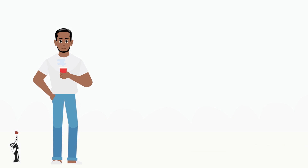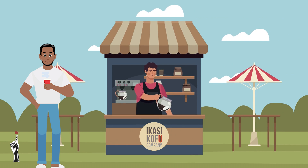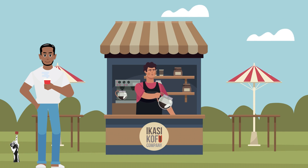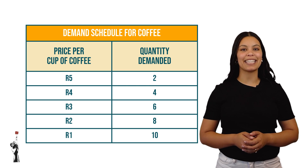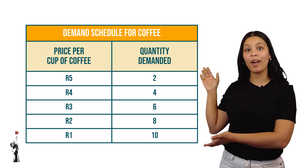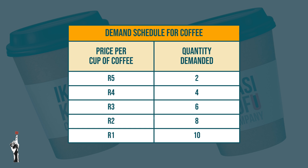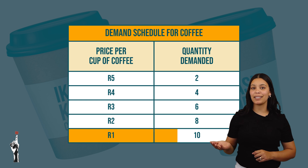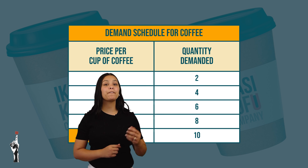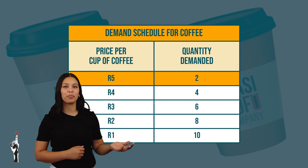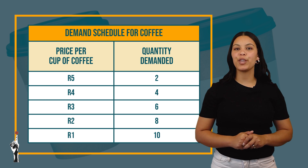Let's get to the fun part and plot the demand curve or graph. We will use Kamva as an example — Kamva is a barista that sells the most delicious coffee to the public. Let's see what happens to the demand for his coffee when the price changes. The following schedule indicates the demand for Kamva's coffee at various prices. On the left we have various prices per cup; on the right we see quantities demanded at those prices. We can immediately see that more customers will buy coffee at a very cheap price and fewer customers at a more expensive price.